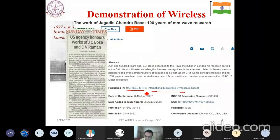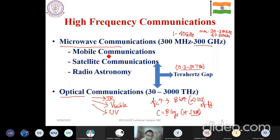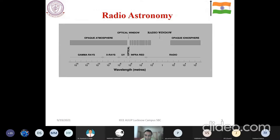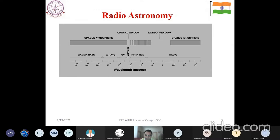Going back to the previous slide, I have listed several applications in the microwave range: mobile, satellite, and radio astronomy. Radio astronomy is less well known to students. If you consider the opacity of the atmosphere, there is transparency in the optical or visible range, and there is a wider window available in the radio or microwave wavelengths, from which one can study the universe in microwave wavelengths.